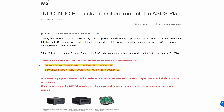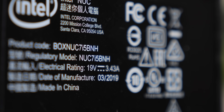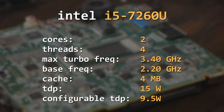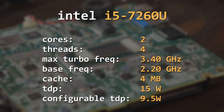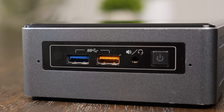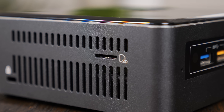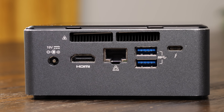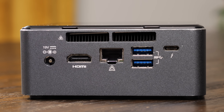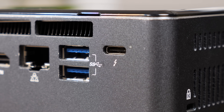This model specifically is the NUC 7 i5 BNH, which features the Kaby Lake Core i5-7260U — a two-core, four-thread processor with a max turbo frequency of 3.4GHz and a base frequency of 2.2GHz. On the front there's two blue and orange USB 3 ports, a combo audio jack, and a power button. On the side there's a microSD card slot. On the back there's a 19-volt barrel jack for power, an HDMI port, one gigabit Ethernet connection, two more USB 3 ports, and also a Thunderbolt 3 port — which is actually what made these popular for Hackintosh builds, because at the time most PCs didn't have Thunderbolt.